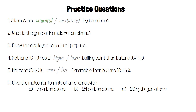Alkanes are saturated hydrocarbons because all their atoms have formed the maximum number of bonds. The general formula for an alkane is CnH2n+2. Propane is the third alkane, so it has three carbons and it looks like this. Methane has a lower boiling point than butane because it's smaller, but it's more flammable than butane.